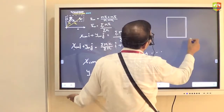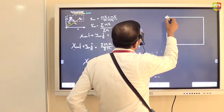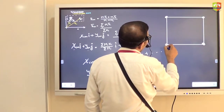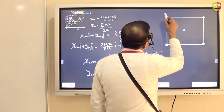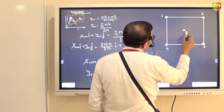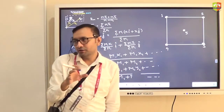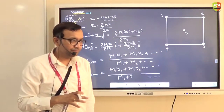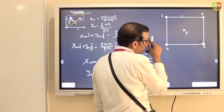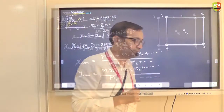We have 5 masses: 1 kg, 2 kg, 3 kg, 4 kg, and 5 kg. They are placed on the sides of an imaginary square, and the side length of the square is 1 unit. You need to find out the center of mass of this entire system, which has 5 particles.